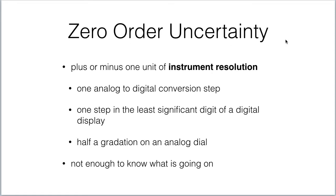To start off with, we have a zero-order uncertainty. This is before we know anything at all about our measurement devices, and it's just plus or minus one unit of instrument resolution. If our instrument is an analog-to-digital converter, we go one step on that ADC. With an Arduino that has a 10-bit ADC dividing things into about a thousand steps, that's about one part in a thousand — not a very big uncertainty. For a digital display, use one step in the least significant digit; for an analog dial, use half a gradation. This zero-order uncertainty is not enough to know what's going on — it's just a resolution measurement — but we can never have a better measurement than the resolution of our system.